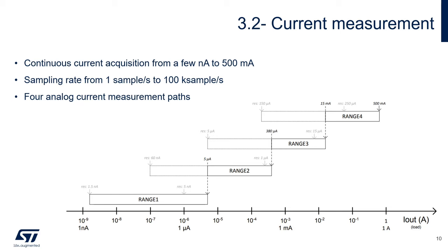The power consumption measurement is based on two key elements: determining the current value and regularly sampling this electrical parameter. The main element for current-to-voltage conversion is the shunt resistor — a precise low resistor that establishes a correspondence between the current passing through it and the voltage developed between its terminals. The ST-Link V3Power has four parallel analog paths, each covering a different current range to achieve a large dynamic range, with selections fully automated at runtime, allowing continuous current acquisition from a few nanoamperes to 500mA. The acquisition is performed with an analog-to-digital converter at a programmable sample rate.